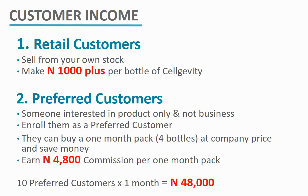The first one is the retail customer income. You buy products at X price, you sell at Y price, then you make Y minus X as your profit. For instance, if you buy six bottles of SellGVT at 39,000 Naira and you sell each bottle at 8,000 Naira — which is the recommended selling price — you will be making 1,500 Naira profit on each bottle. That means on a purchase of six bottles, you earn 1,500 Naira multiplied by 6, giving you 9,000 Naira. On a purchase of 39,000 Naira, you can make a retail customer profit of 9,000 Naira.